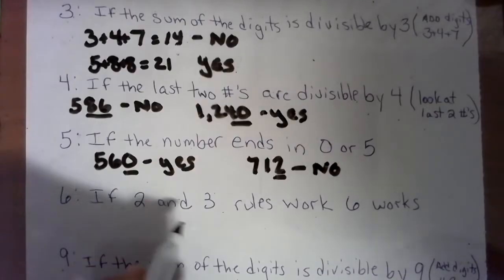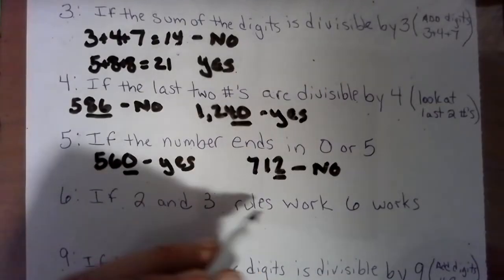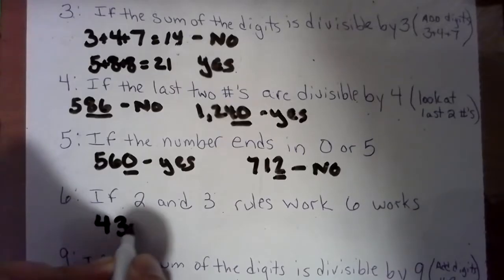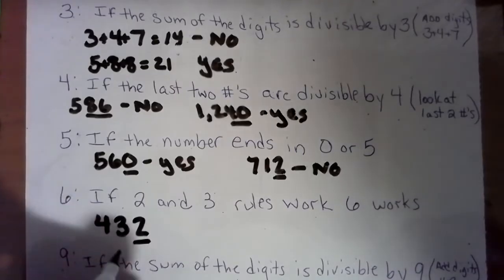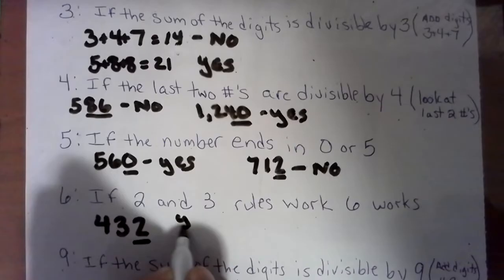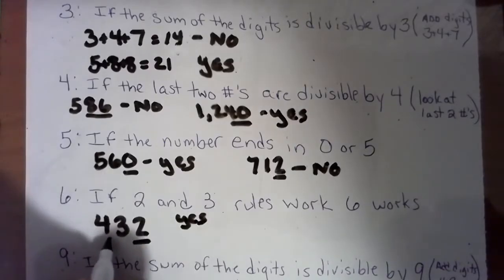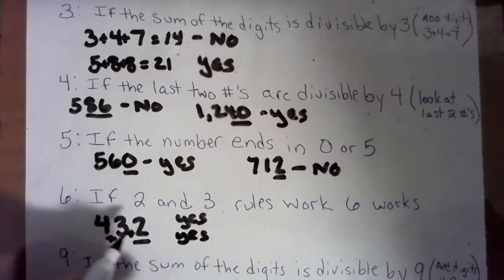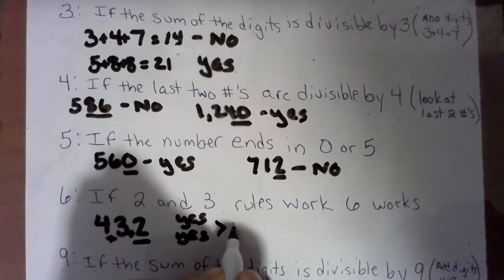So if the two and the three rule works, that's the rule that works for six. For instance, is this number divisible by two? Yes. And let's add up these digits: four, five, six, seven, eight, nine. Can three go into nine? Yes. So if we said yes to two and yes to three, we say yes to six.